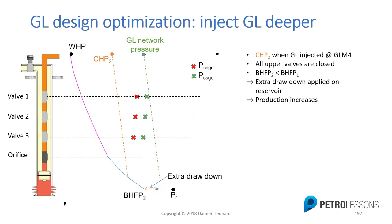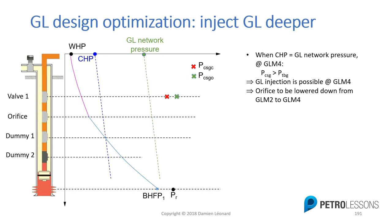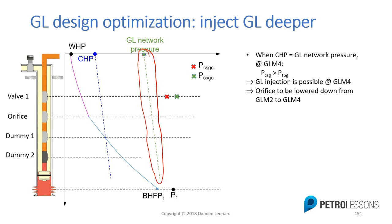This is the easiest way to optimize your gas lift well by doing a design change. How can you identify a well to optimize this way? There are two approaches, both coming from your monitoring. The first is to perform a flowing survey — you measure pressure along your tubing to get the pressure profile, then plot it alongside the casing pressure profile you could have if applying the gas lift network pressure at the casing head. You can then compare these values to see if this optimization is possible.